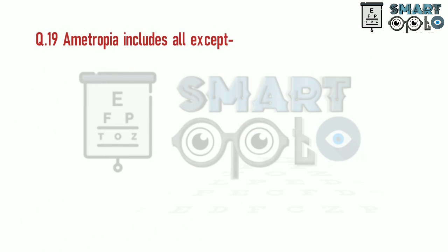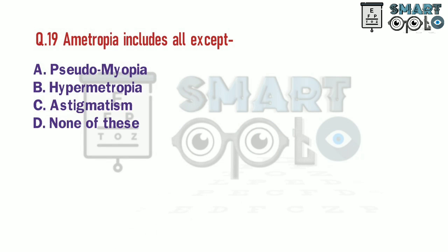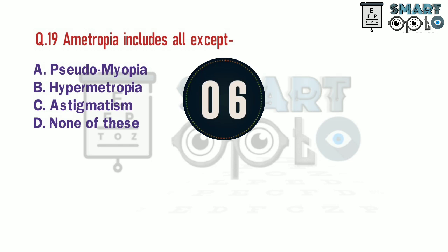Q19. Myopia includes all except: A. Pseudomyopia. B. Hypermetropia. C. Astigmatism. D. None of these.